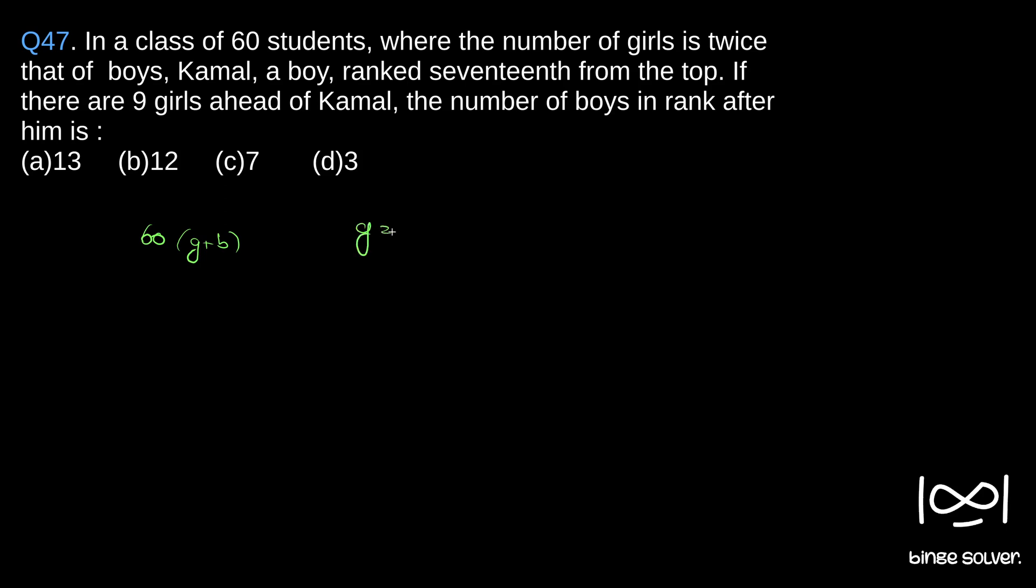We can use this to find the number of girls and boys. Girls plus boys is 60, and girls is twice the number of boys. If you replace girls with 2b, we have 3b equals 60, or b equals 20. So the number of boys is 20, and the number of girls is 40.